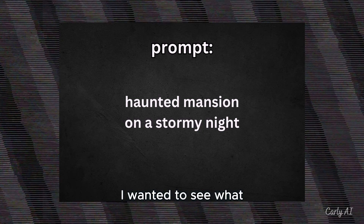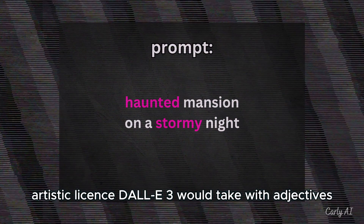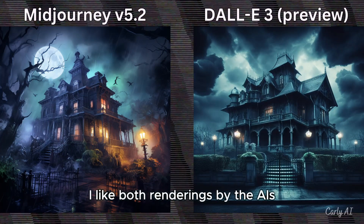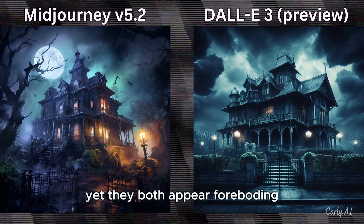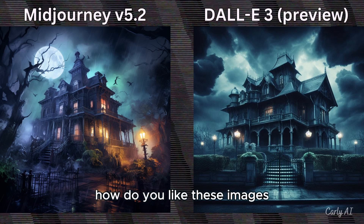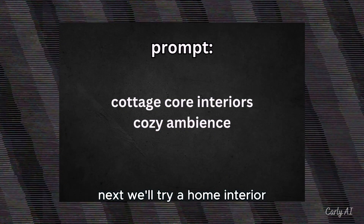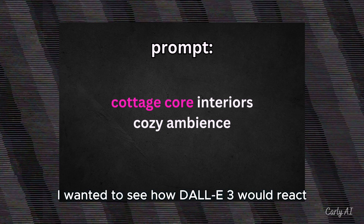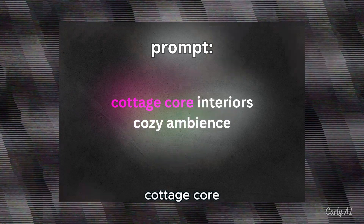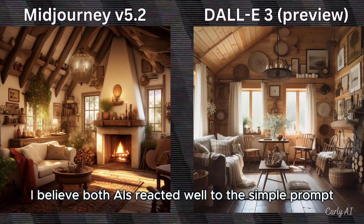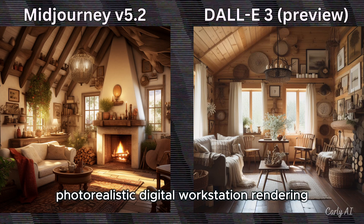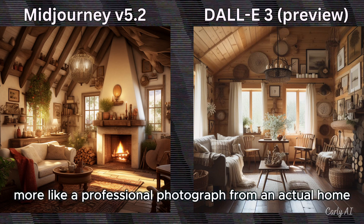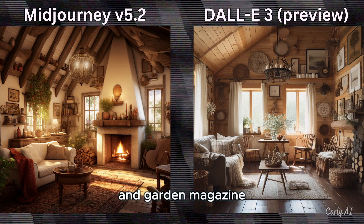In the next example, I wanted to see what artistic license DALL-E 3 would take with adjectives and weather conditions. I liked both renderings by the AIs. There isn't any external evidence of haunting in either image, yet they both appear foreboding. How do you like these images? Next, we'll try a home interior. I wanted to see how DALL-E 3 would react to the common art style, cottagecore. I believe both AIs reacted well to the simple prompt. The Midjourney result has the flavor of a photorealistic digital workstation rendering, whereas the DALL-E 3 result looks more like a professional photograph from an actual home and garden magazine. The result you prefer may just depend on your personal taste and goals.